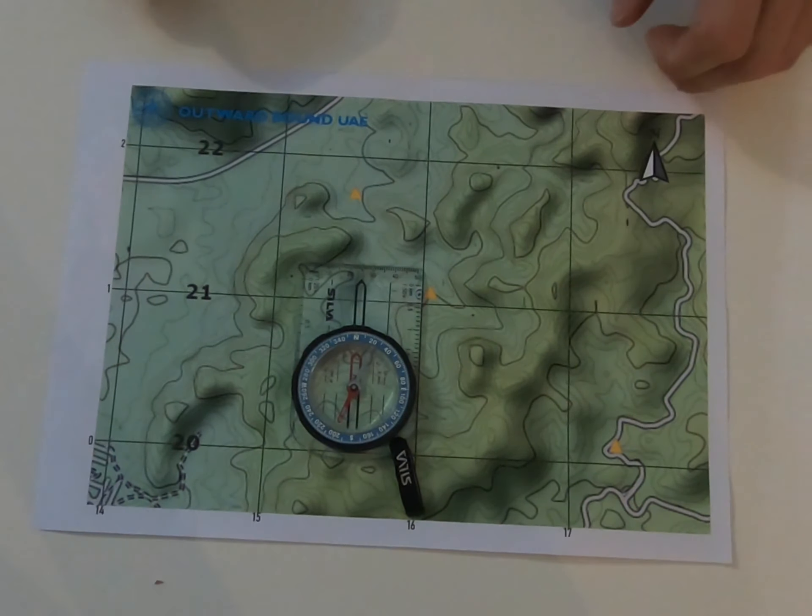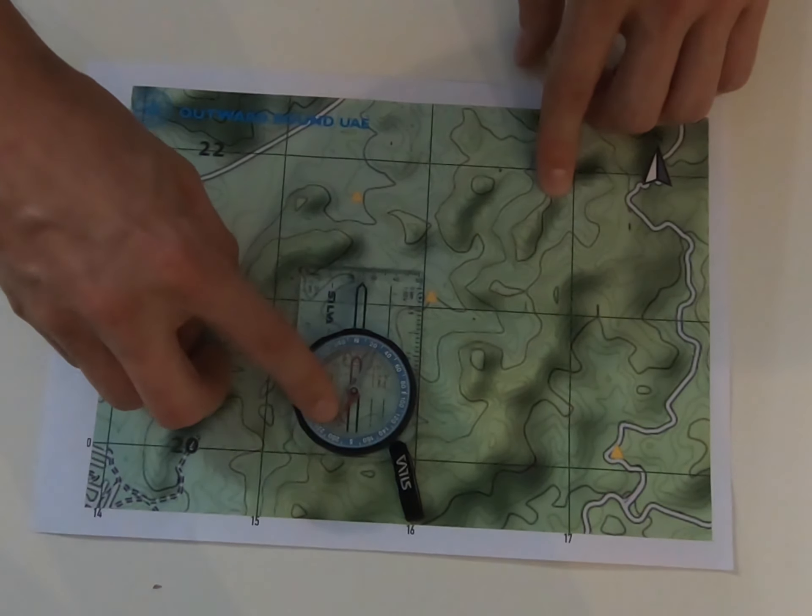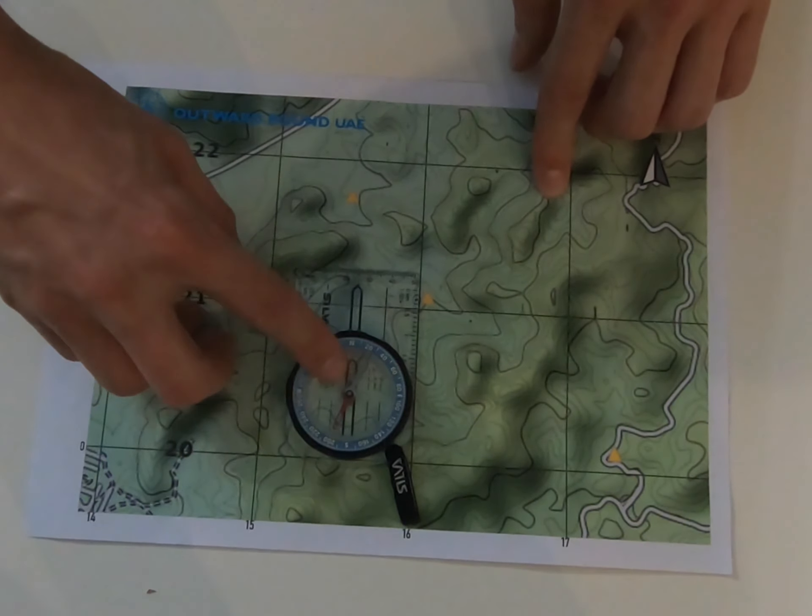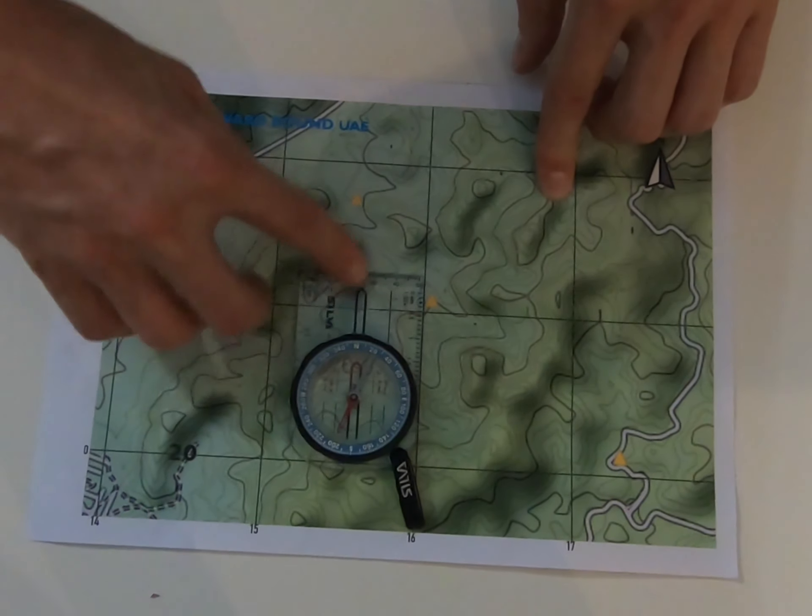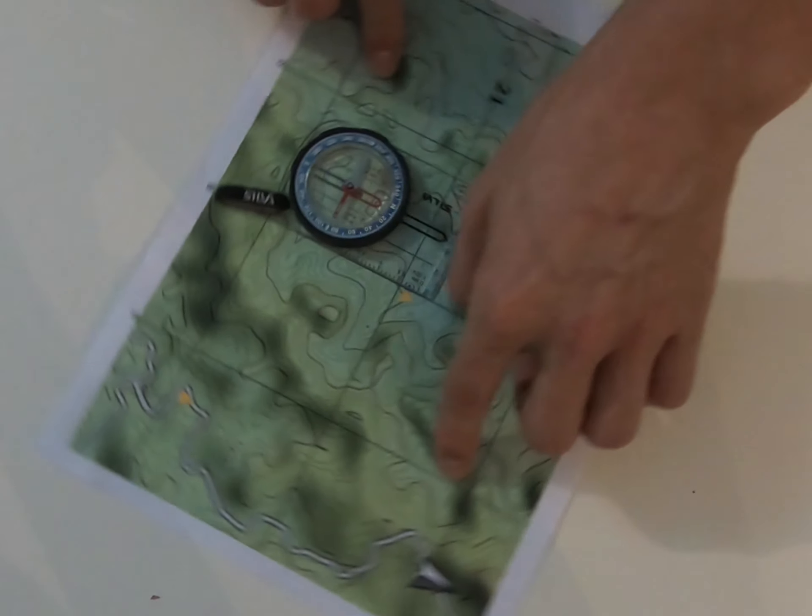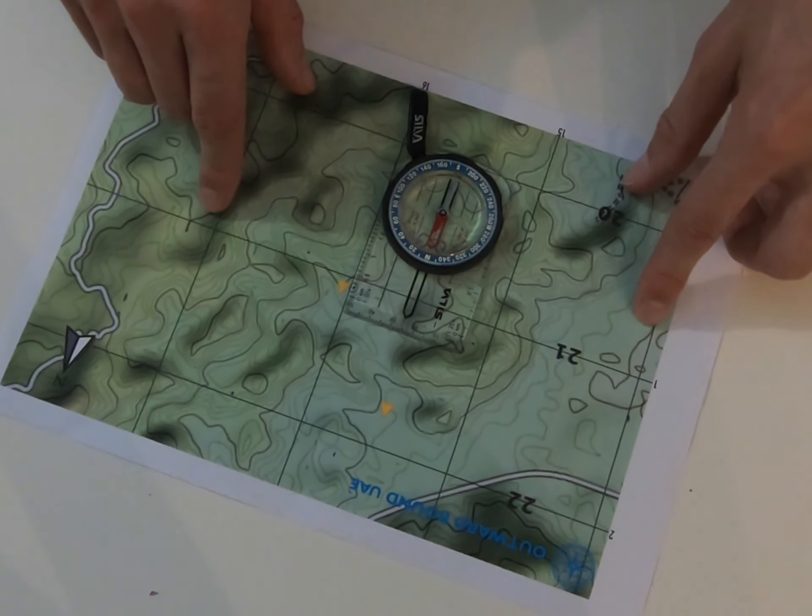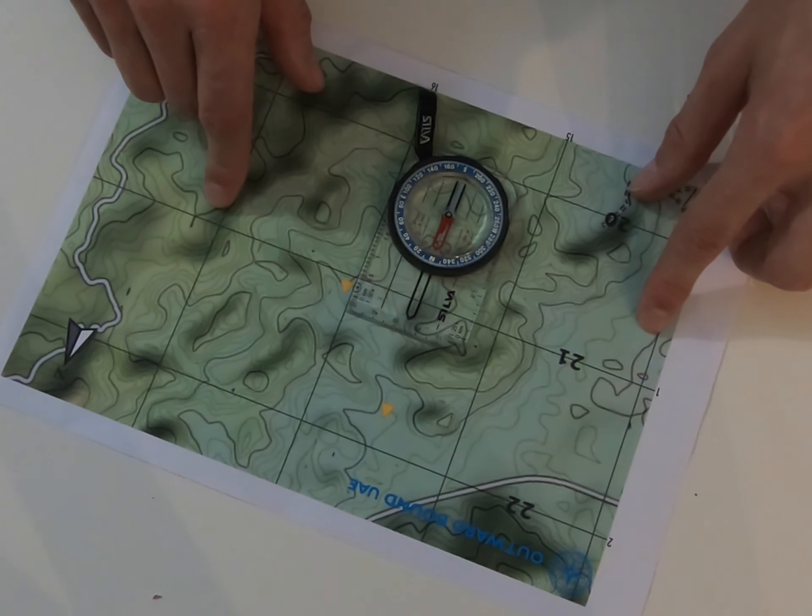Finally, to get everything in line, we're going to move our map and our compass all together until our north needle lines up with our directional arrow and our orientational arrow. So just give that a quick spin.